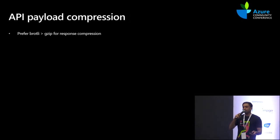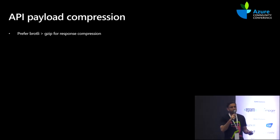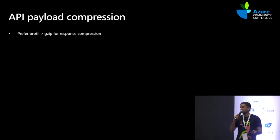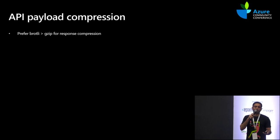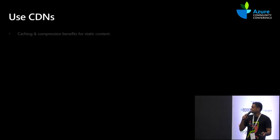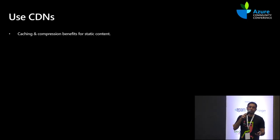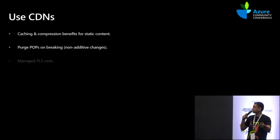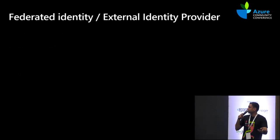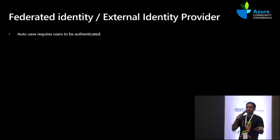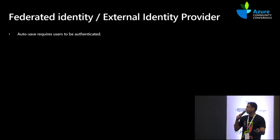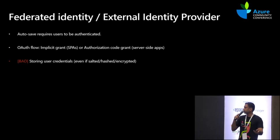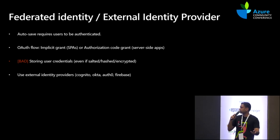We use Brotli compression for everything via middleware in the ASP.NET Core pipeline, which compresses all JSON responses to 40% of their original size. CDN again provides caching, compression, managed TLS certs, and URL rewriting rules to set cache headers. We use Auth0 for all identity and access management with the authorization code grant.